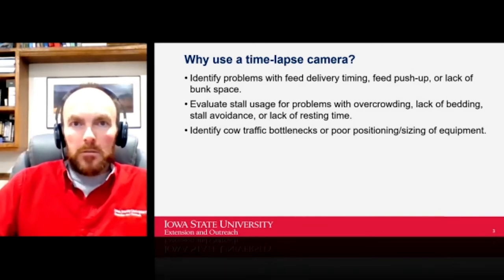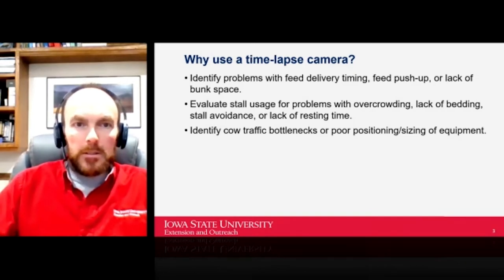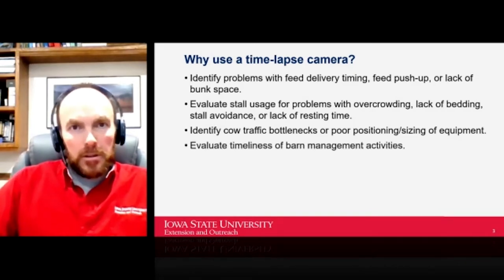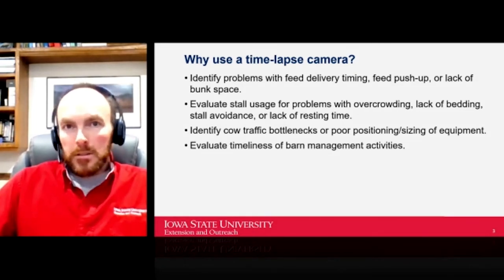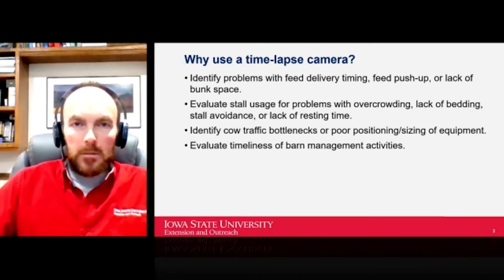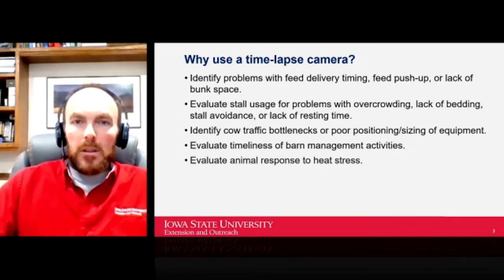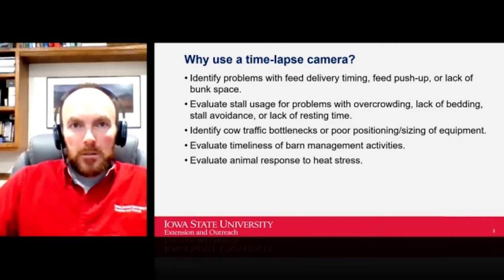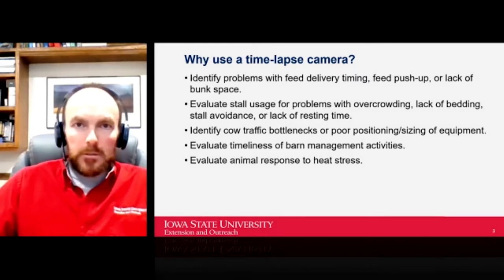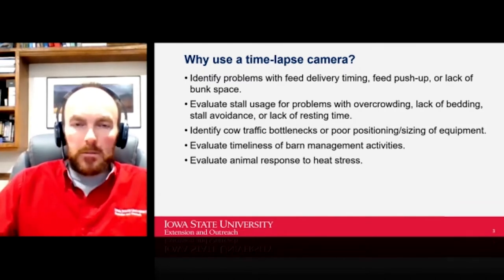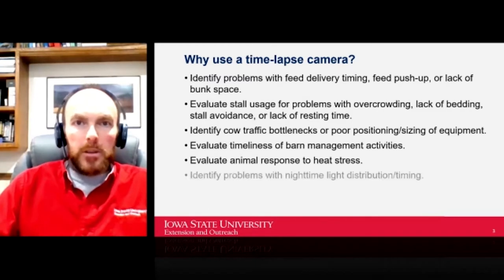You can use time-lapse cameras to identify traffic flow bottlenecks in the barn — cow flow issues around robotic milking units, poor positioning of equipment and gating. You can also look at barn management activities: are your scrapers running as often as they need to, are the stalls getting cleaned and bedded when they should? Heat stress is another use — evaluating animal behavior, whether cows are bunching.